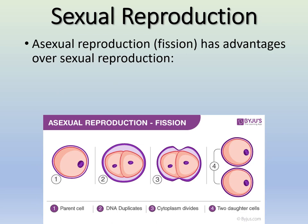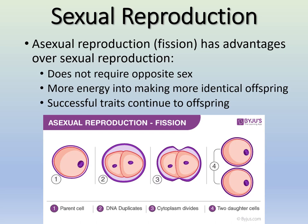Asexual reproduction — binary fission — does have some advantages over sexual reproduction. It doesn't require the opposite sex. One cell becomes two identical daughter cells. You can put more energy into making more copies of yourself, and it takes a lot less energy than sexual reproduction. If you have a successful trait, you'll continue that to your offspring, whereas in sexual reproduction that trait may or may not pass on due to variation.